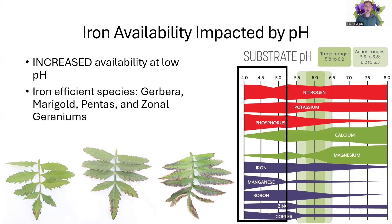Then we need to look at iron availability impacted by the substrate pH. This is a very common problem, especially here where we have low buffering capacity in North Carolina, where that pH starts to drop below 5.2, down below 5. We start to see a large increase in iron availability. And for an iron-efficient crop, you may start to see problems with a toxicity occurring.